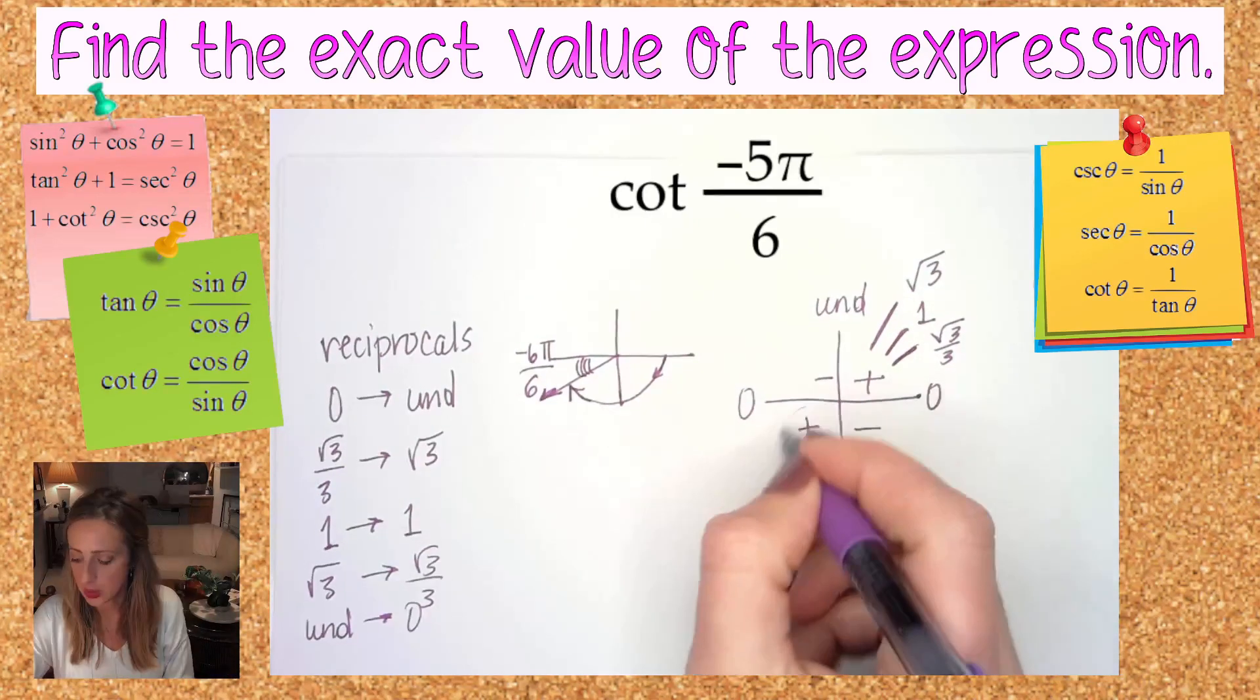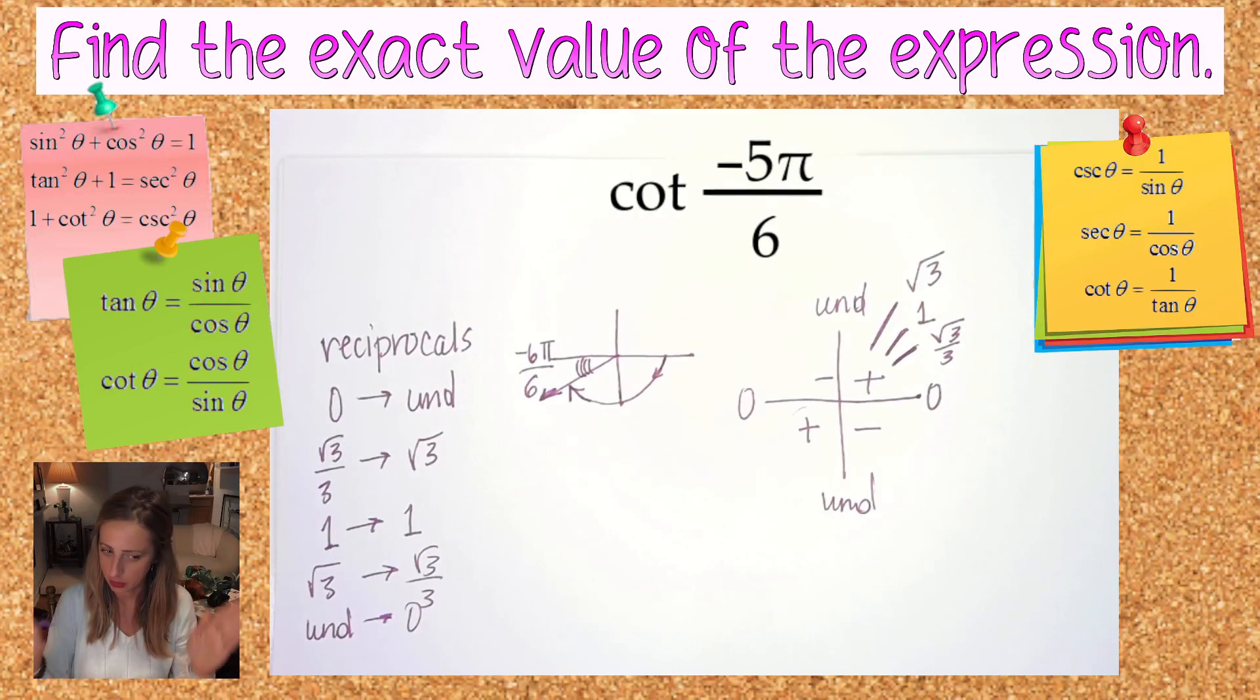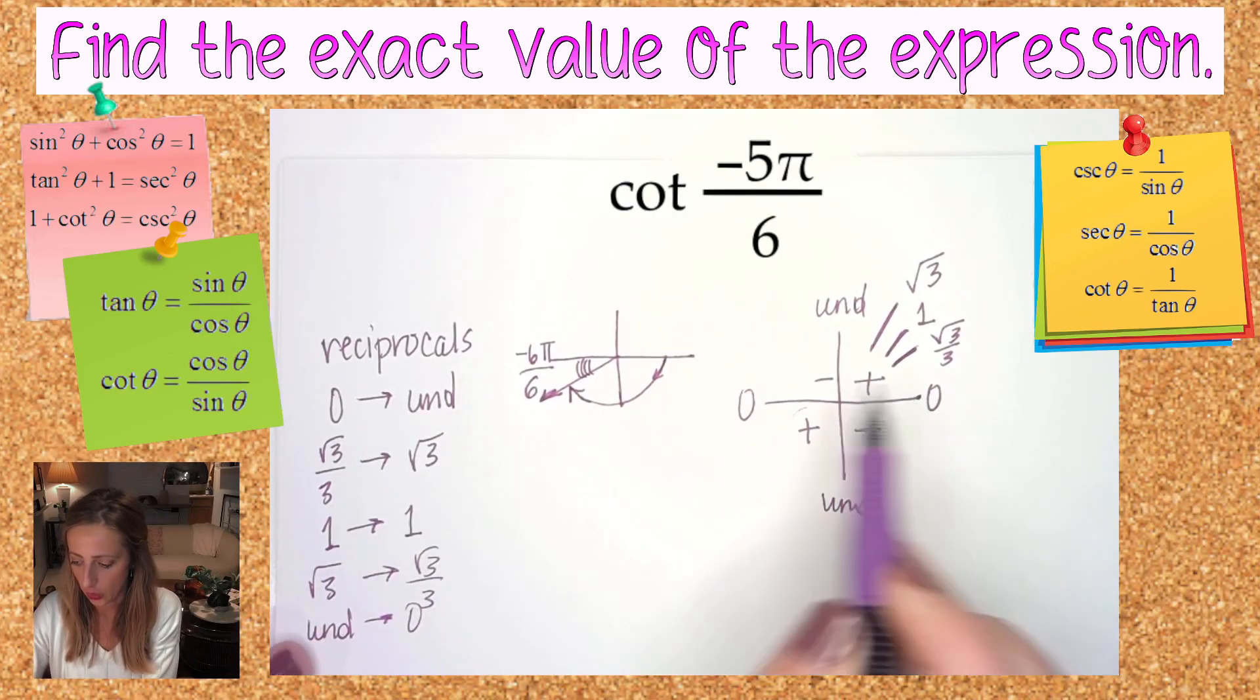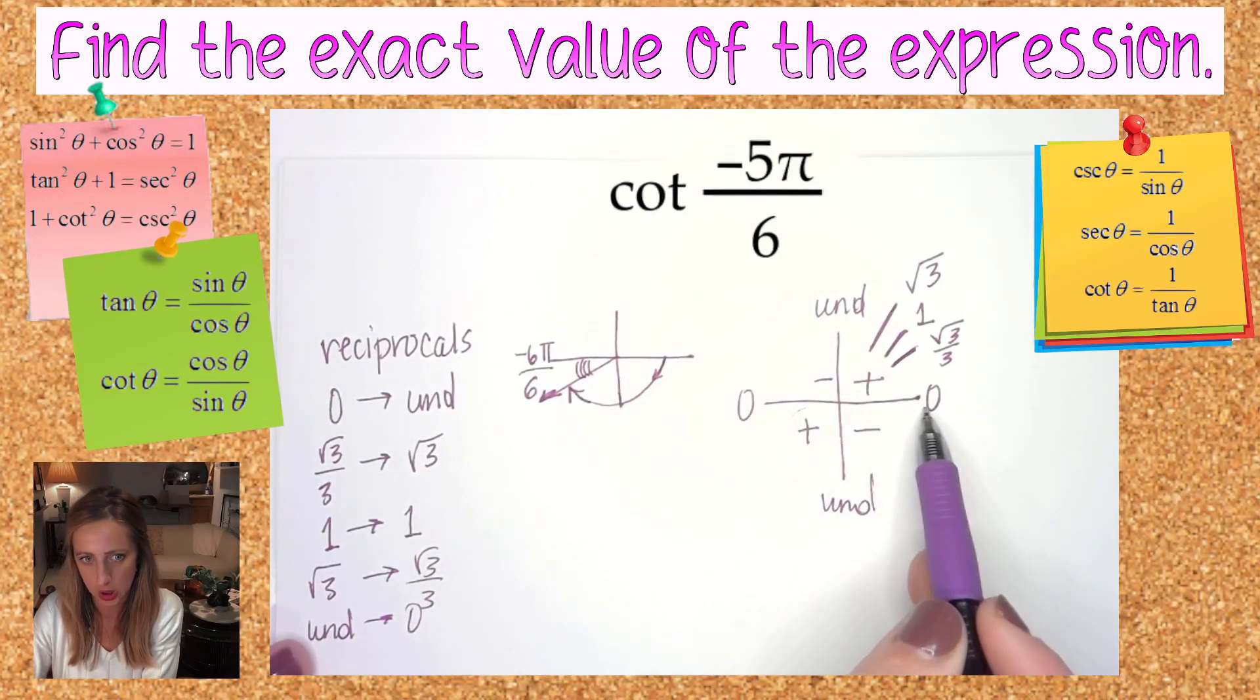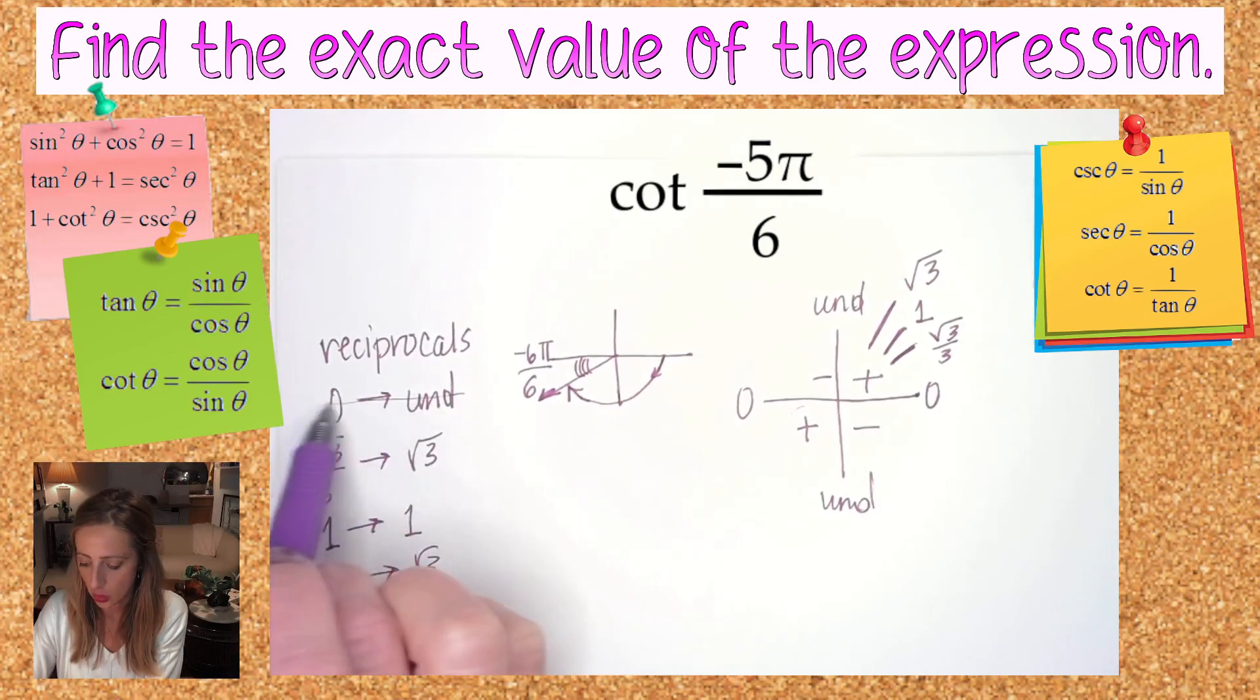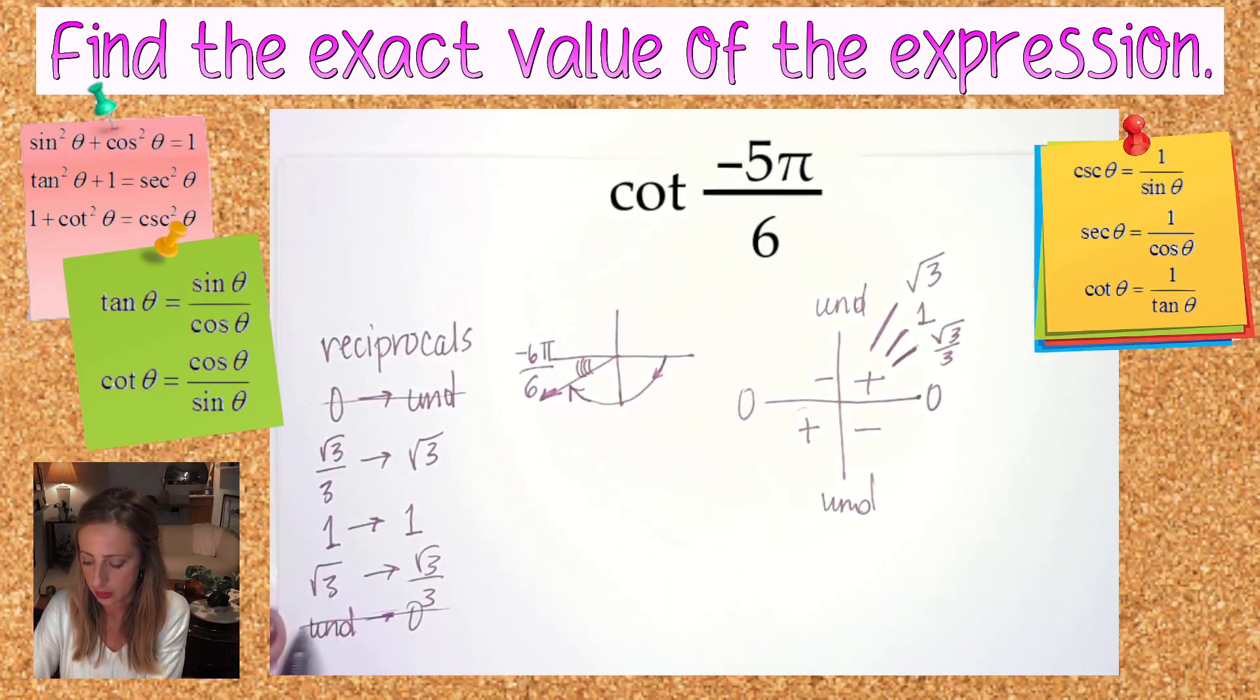Cotangent and tangent are both positive and negative in the same places, so your answer will be positive. Now it's not going to be a quadrantal angle—that eliminates your zero and undefined, right? Those are out. We have very few choices right now. It's positive—you have a one in three shot.